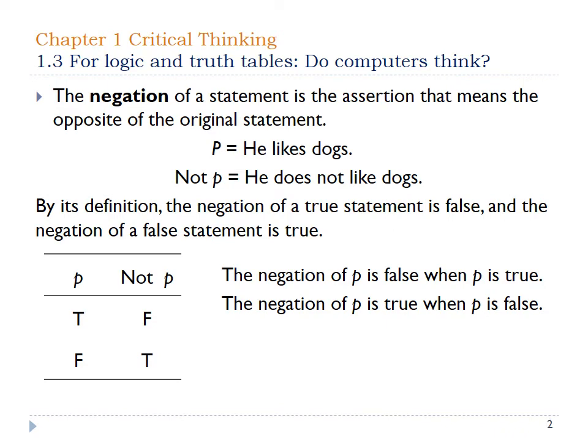The first one we're going to look at is called negation. This is when you say you don't want something. A negation of a statement is the assertion that means the opposite of the original statement. For this example, we're going to assume that he likes dogs. So the opposite — the negation — would be he does not like dogs. By definition, the negation of a true statement is false. He can't like dogs and not like dogs at the exact same time.